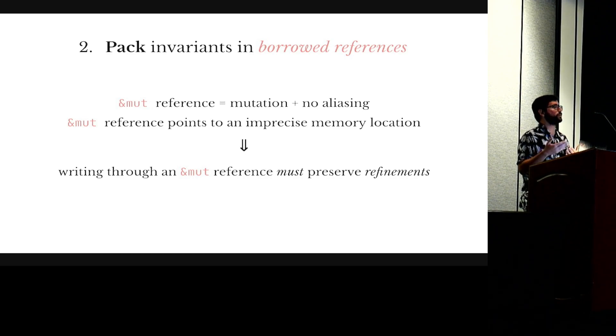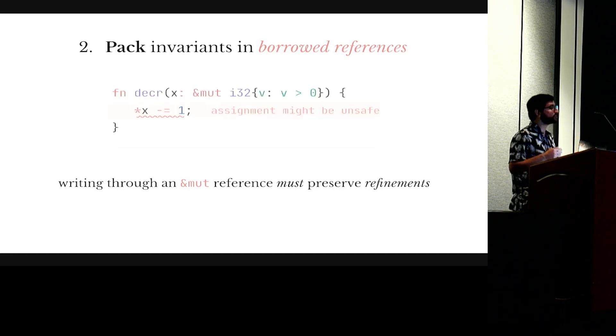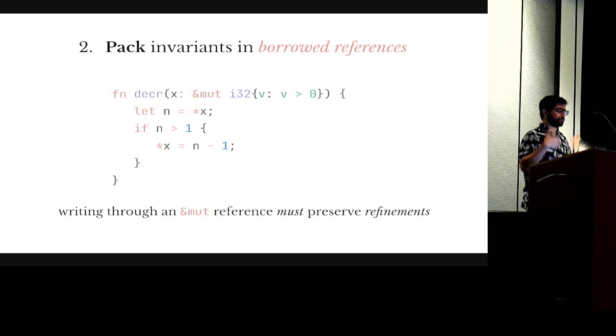This means that whenever we update through a refinement through a mutable reference, we have to preserve refinements because there may be some other pointer that has some expectations on location, so we must satisfy those expectations. In practice this means that whenever we try to update through a mutable reference, if we do so in a way that we cannot prove that the invariant is preserved, then Flux will reject the code. So if we want to do such an update, then we have to explicitly check that the invariants will be preserved, like I show you in this example.